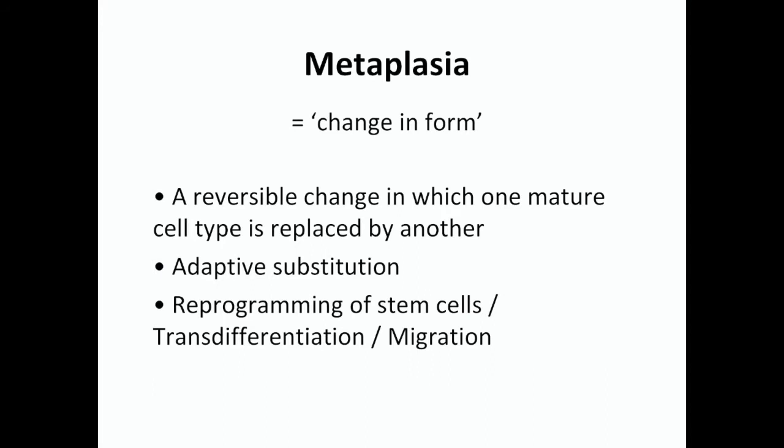Let's begin with some definitions. Metaplasia is a change in form — as its name suggests — from one mature tissue to another. Examples of metaplasia include the lower end of the esophagus and the uterine cervix, both of which have a squamous columnar junction which will undergo squamous metaplasia. Metaplasia is an adaptive substitution. In the cervix, at the squamous columnar junction, columnar epithelium becomes squamous. In the esophagus, particularly if there's gastrointestinal reflux, the lower end of the esophagus becomes lined by columnar mucosa — so-called Barrett's change.